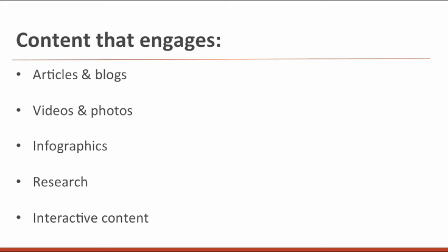The five content types are: articles and blogs; videos and photos; infographics; research including white papers, guides, and ebooks; and interactive content like surveys, polls, contests, and augmented reality apps.